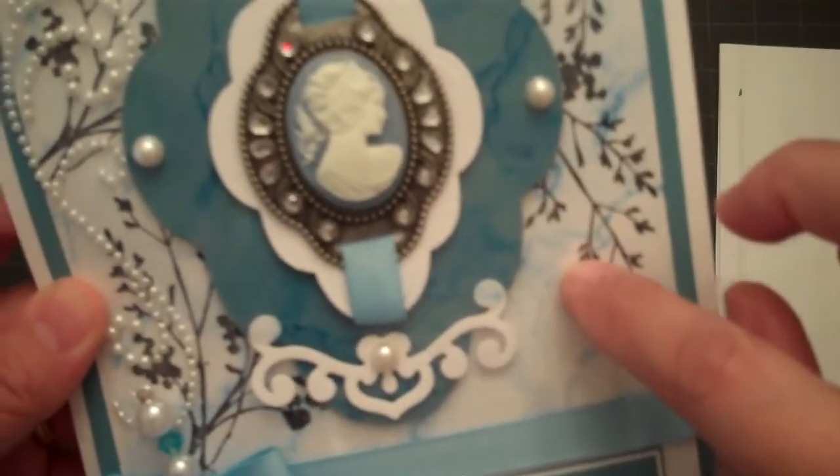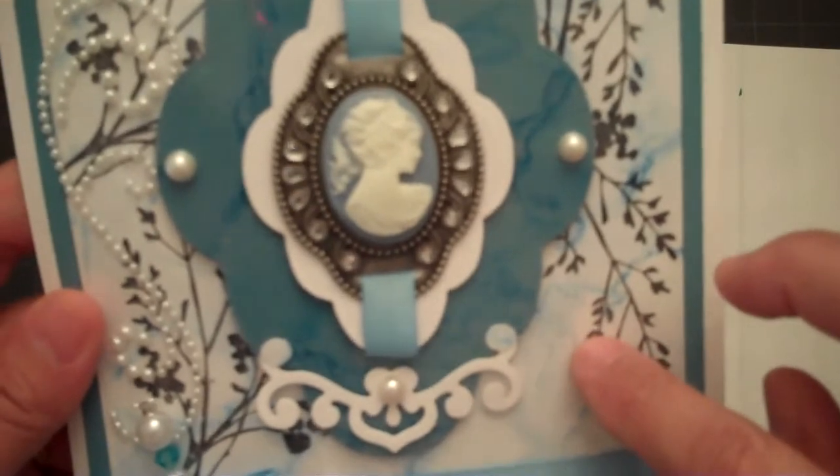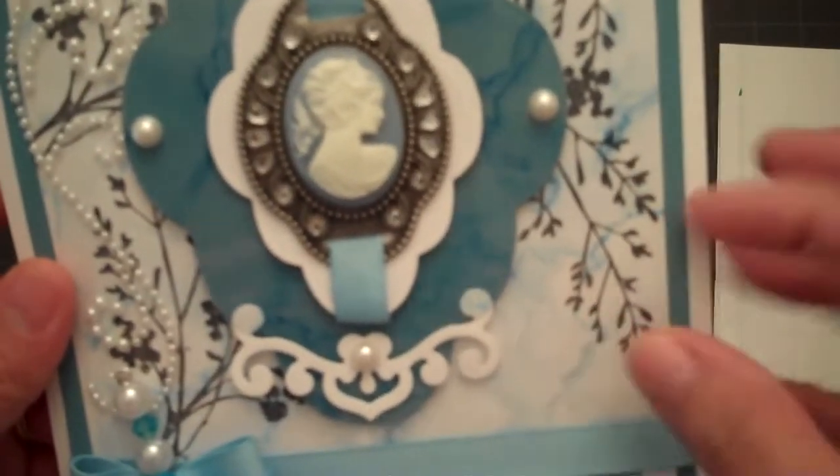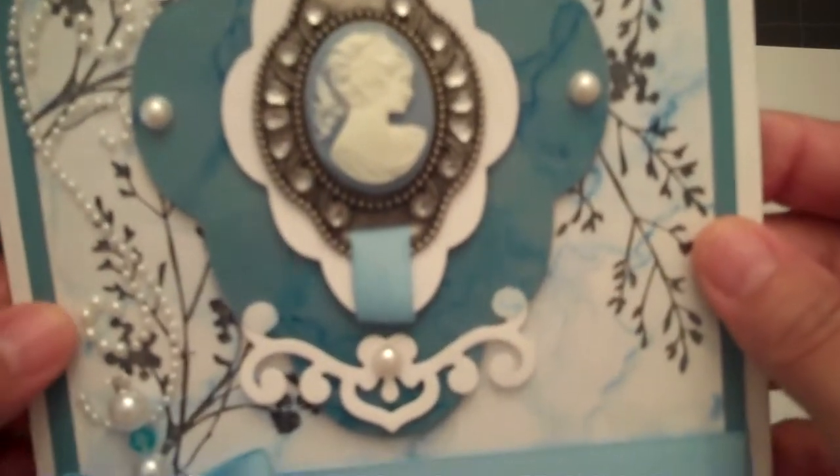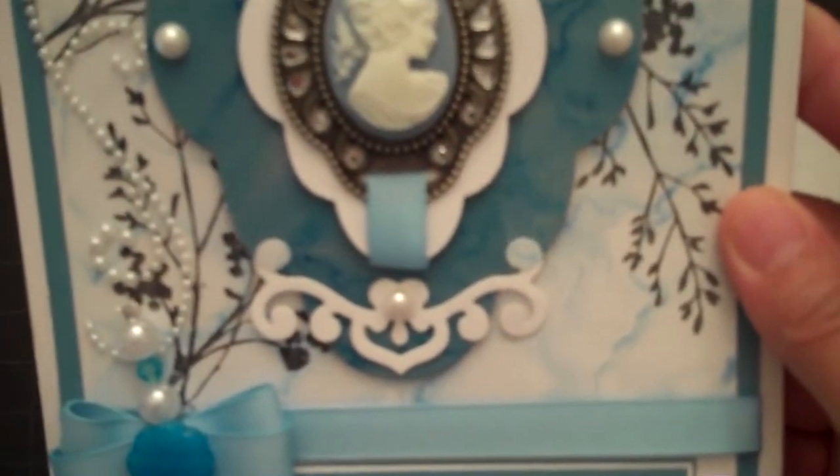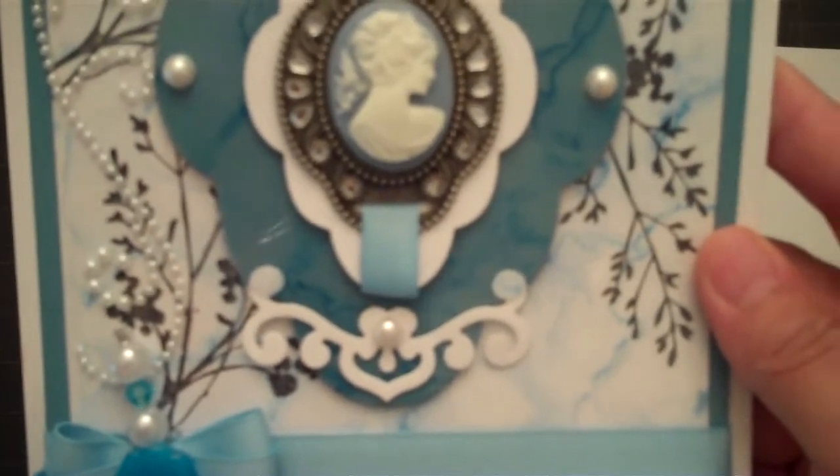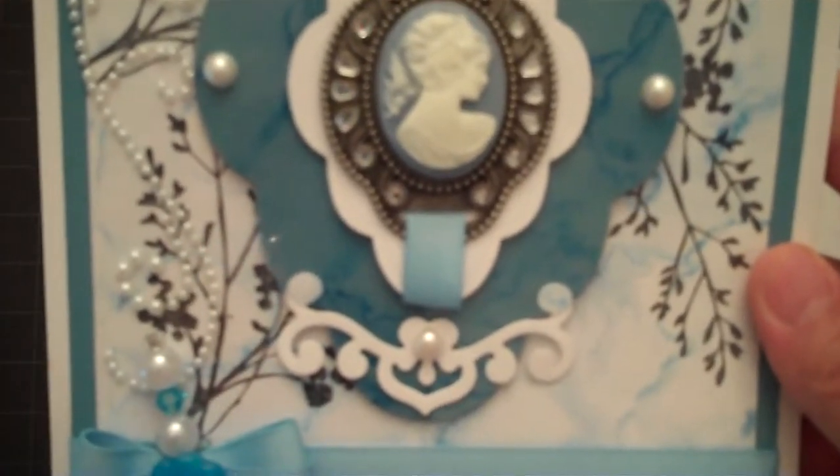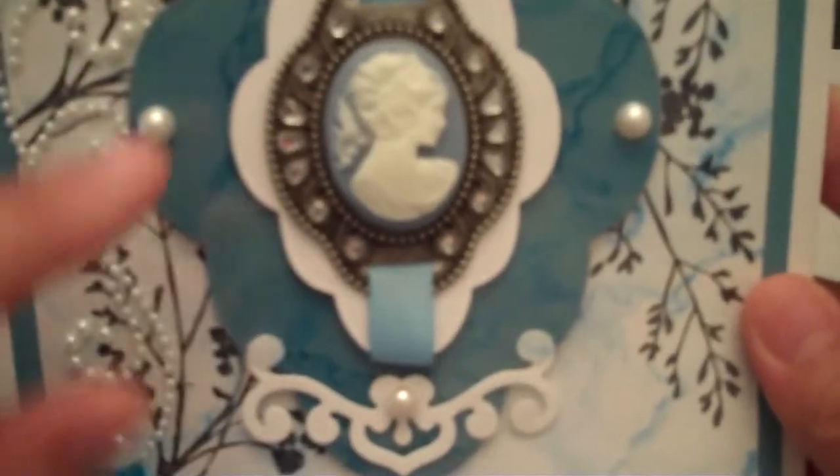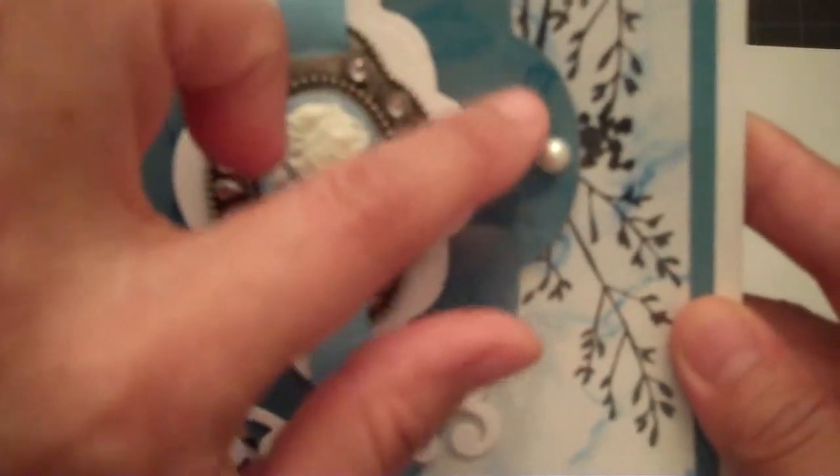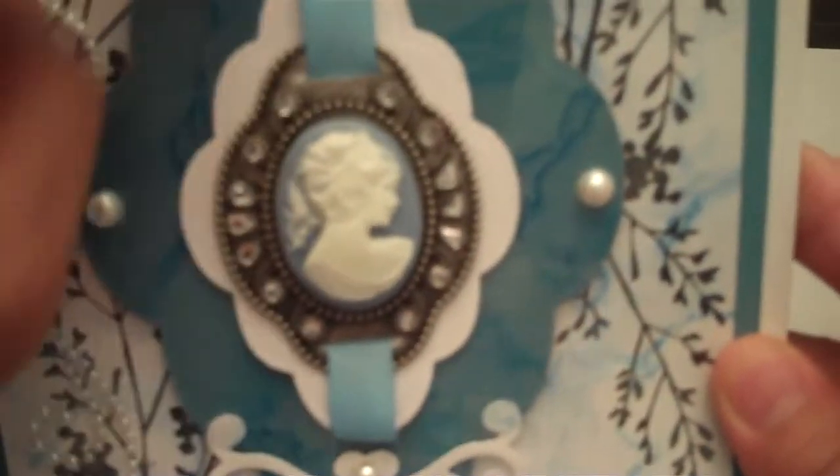I used a marbling effect using my Copics for the back of the acetate, and it gives it a really unique look. You can use just about any type of alcohol inks or alcohol markers to get this effect. I also used it on this cut piece in the center,